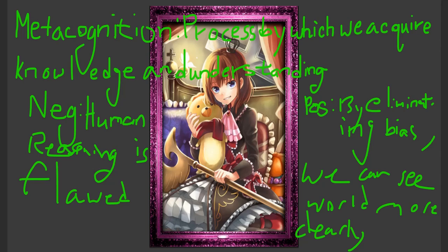We care about metacognition because it can help us avoid errors. Metacognition helps by making us aware of ways we tend to go wrong while trying to acquire knowledge or understanding. If we are aware of how things can go wrong, we are more likely to pay careful attention to how we think and thus are more likely to avoid going wrong.